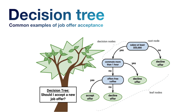If the salary is fifty thousand or more, you can decide to proceed. If not, that is an immediate no. If salary is yes but commute is more than one hour, are you really going to commute that long? If yes, decline the offer. If no, check for free coffee — if yes, accept the offer; if no, decline.